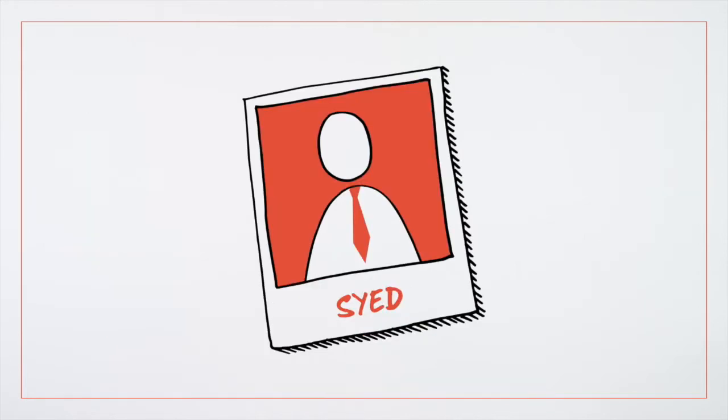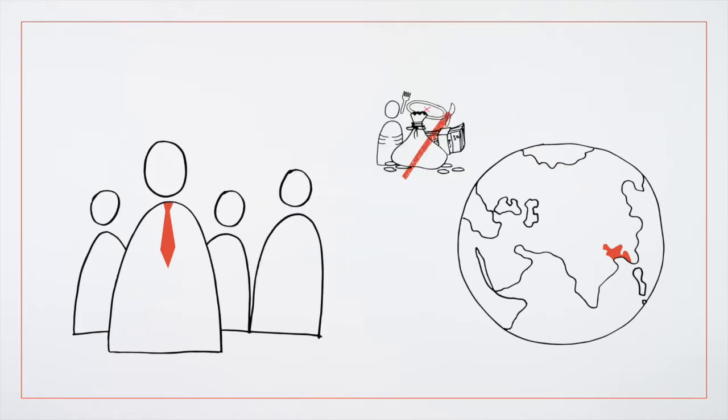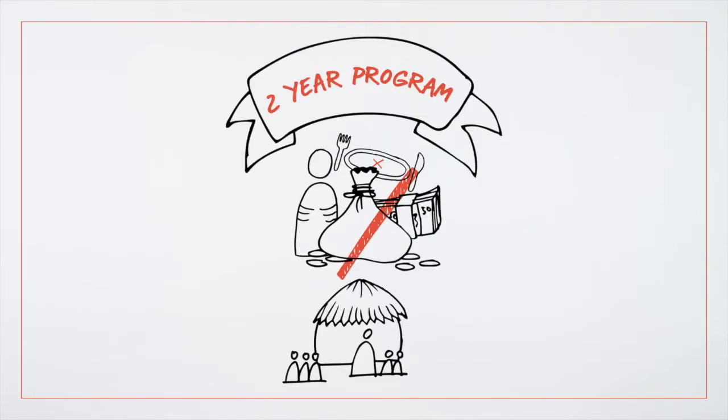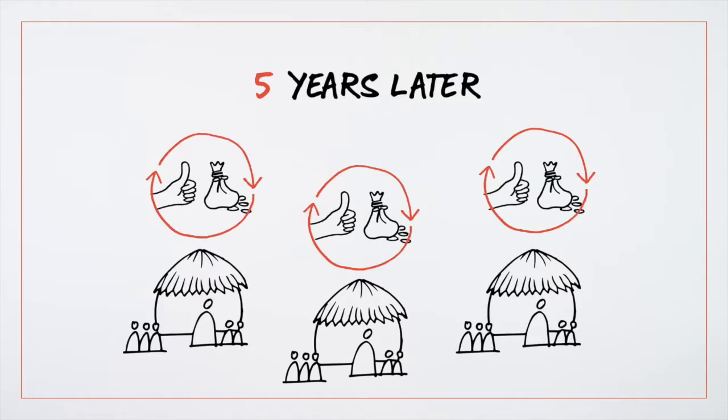Saeed is the Bangladesh Director of an international NGO. His team works towards tackling extreme poverty in the region. They have successfully tested and implemented a two-year programme that helps households out of poverty. This work has created sustained change years after their support has ended.